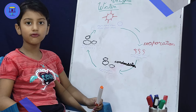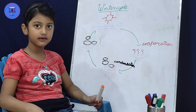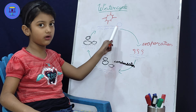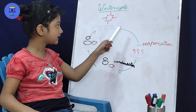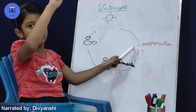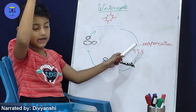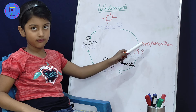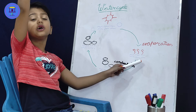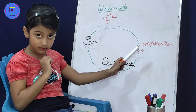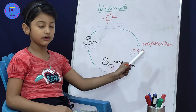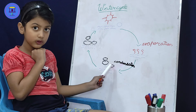Now I am going to explain again. Water cycle. The sun shines on the sea, rivers, lakes, and ponds. The water vapor becomes a part of the earth. Water in the earth is called water vapor. The warm water vapor rises up. The higher it goes, the cooler it becomes. This process is called evaporation.